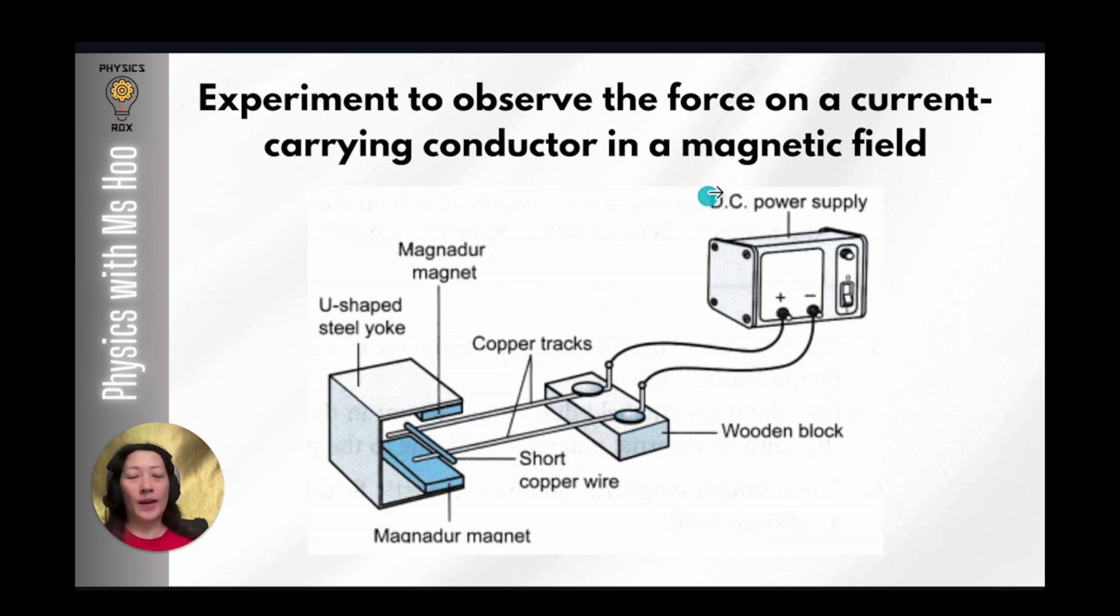You must have a power supply and it must be direct current because current should be flowing in only one direction. The DC power supply is connected to the copper tracks which are in turn connected to a short copper wire. The copper tracks and short copper wire have to be exposed so that current can flow freely from the power supply through the copper tracks through the short copper wire and then through the other track back into the power supply.